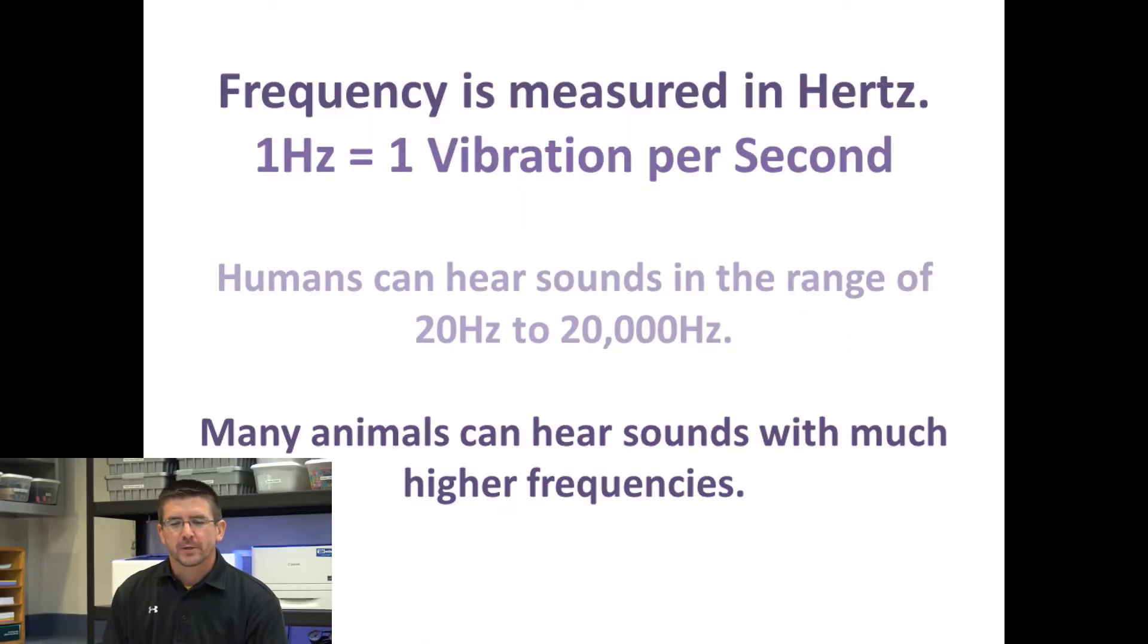When we measure frequency, we measure it in a unit called hertz. And one hertz basically means one vibration of the medium per second. So each of those crest and troughs that you see on the wave is vibrating the medium once. So that means one wavelength basically would be traveling through one second, one vibration per second.